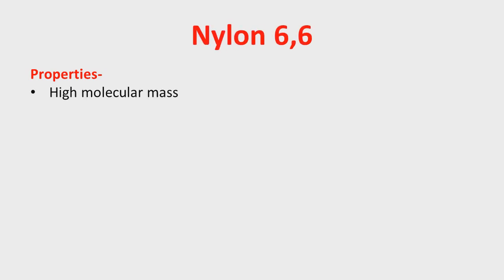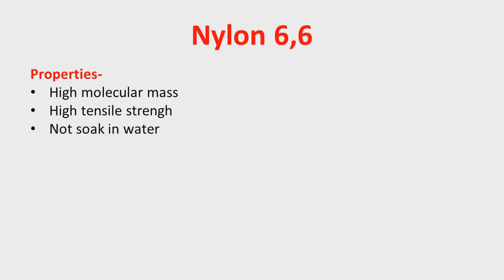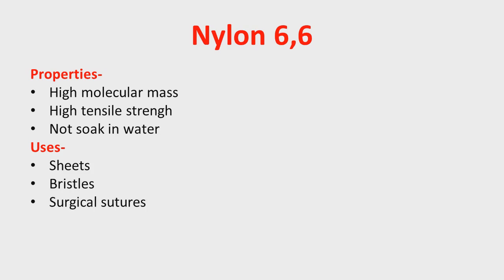Now let's see some properties and uses of nylon 66. Nylon 66 is a high molecular mass linear polymer, with a molecular mass of 12,000 to 50,000 units. It has high tensile strength and does not soak up water. Therefore it is used in making different sheets and bristles for brushes. Nylon 66 is also used in manufacturing of surgical sutures and textile fabric.